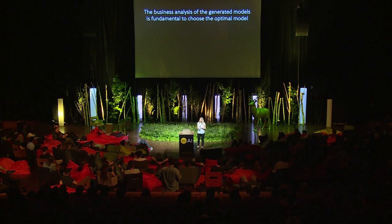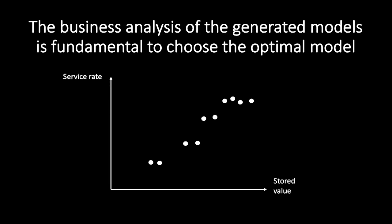The custom algorithm generates a number of models that test different combinations of our two smoothing parameters, and the calculated models are evaluated against two KPIs defined initially: service rate and stored value. You get a graphic like this where one point represents one model, and objectively, you can all agree that this one is the best model regarding the two KPIs.